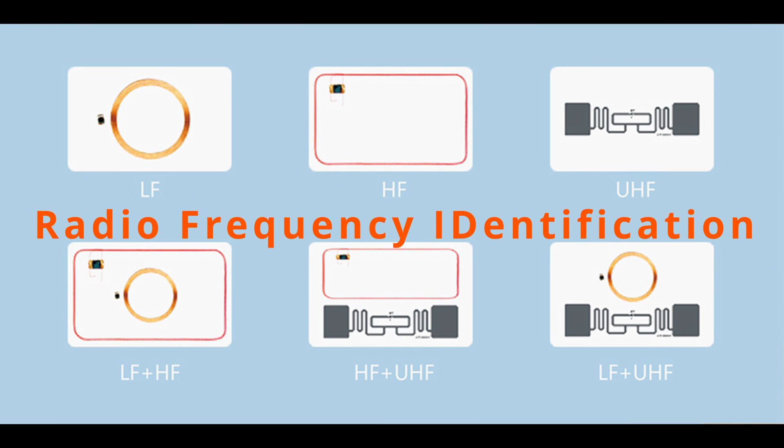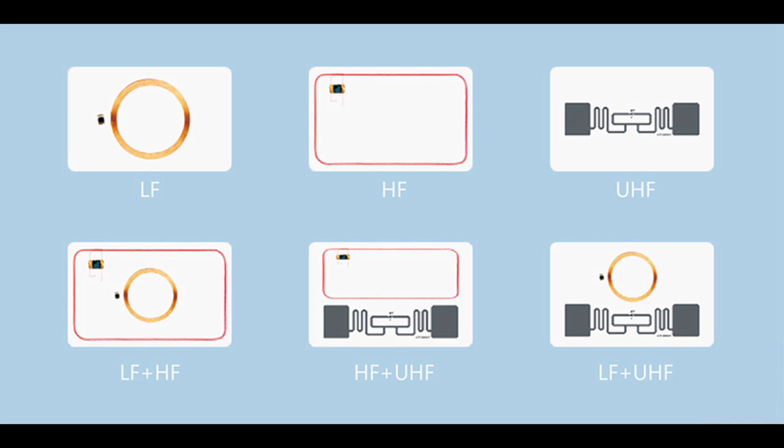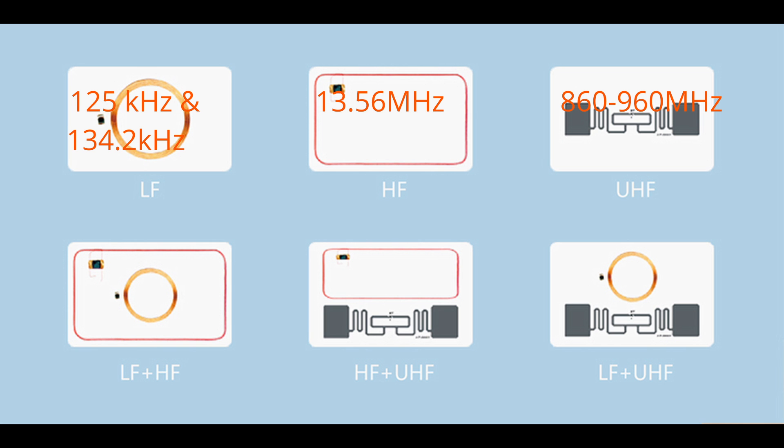RFID stands for Radio Frequency Identification. There are different kinds of RFID. In the next few videos we're going to focus on Low Frequency RFID, which is 125 kHz — there's also 134.2, but the Flipper does 125. Next is High Frequency, or NFC, at 13.56 MHz. Then there's Ultra High, or UHF, at 860 to 960 MHz, and even Super High at 2.45 GHz.